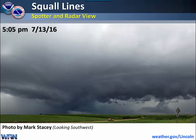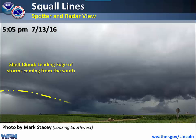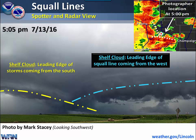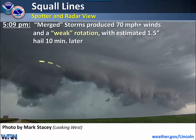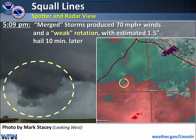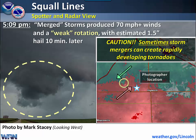Here's the first picture taken just after 5 p.m. This particular example actually has two shelf clouds associated with it — one is associated with the storms coming up from the south, and the other is from the storms coming in from the west. A few minutes later, these storms came together to produce 70 mph winds and some weak rotation. About 10 minutes after that, hail reached up to an inch and a half in diameter.